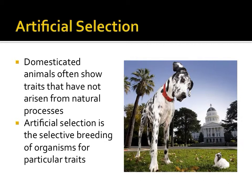Orchids are bred for specific appearances by humans through artificial selection, and are acknowledged to be some of the fastest evolving organisms on Earth. Although natural selection is not occurring, these populations are evolving because there is a change in the frequency of some trait relative to another in a population over time.